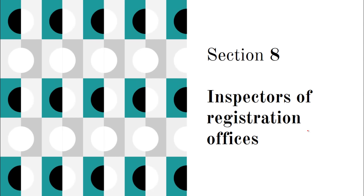Section 8 talks about inspectors of registration offices. Here 'may' is used, so it is at the state government's discretion — the state government can appoint or not appoint these inspectors. They will appoint persons as inspectors of registration offices and assign their duties. Subordination is also specified in this section.